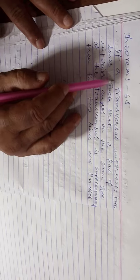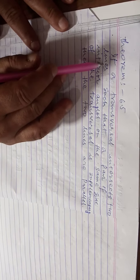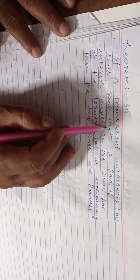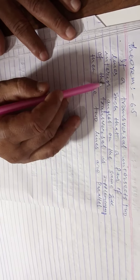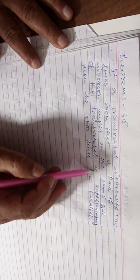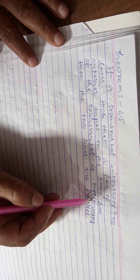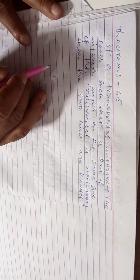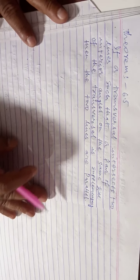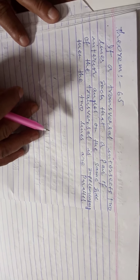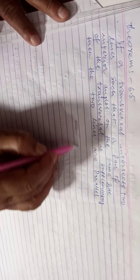Students, a transversal intersects two lines such that a pair of interior angles on the same side of the transversal is supplementary. Supplementary means 180 degrees. So, transversal, same side of the transversal, interior angles on the same side of the transversal.